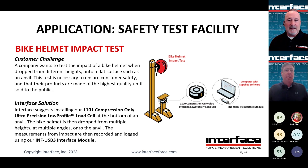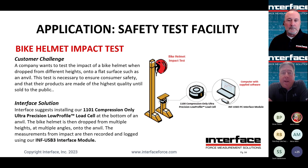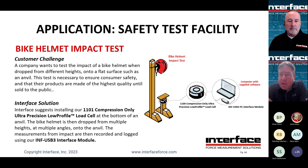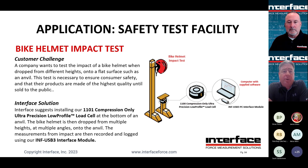Bike helmet impact test — essentially an impact test where a bike helmet with a head form inside is dropped onto an anvil mounted on a load cell. They're looking for data on how hard the impact is, then inspect the helmet afterward to see what damage occurred relative to the applied force. This is a relatively simple setup: a standalone laptop with an INFUSB USB signal conditioner and our 1100 series compression-only load cell, just monitoring for those impact forces.